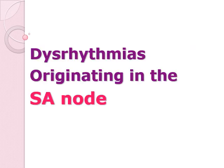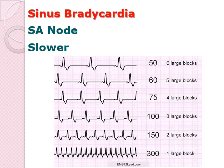Let's talk about the dysrhythmias originating in the SA node. There are three to focus on: sinus bradycardia, sinus tachycardia, and sinus arrest. Sinus bradycardia originates from the SA node, and the problem is that it is slower than normal. Looking at the ECG tracing, the relationship between QRS complex distance and heart rate shows that if the distance between QRS complexes is wider, the heart rate of the patient is lower.